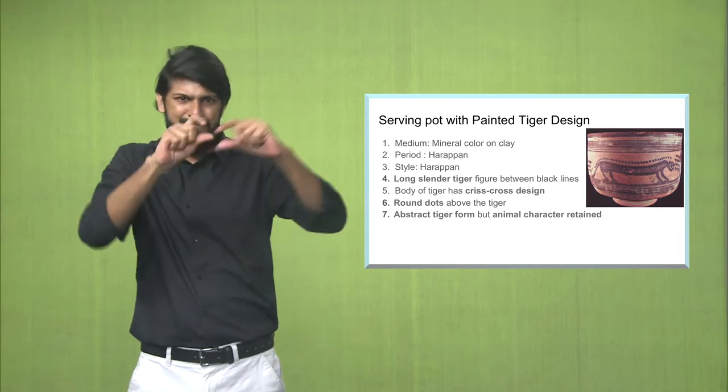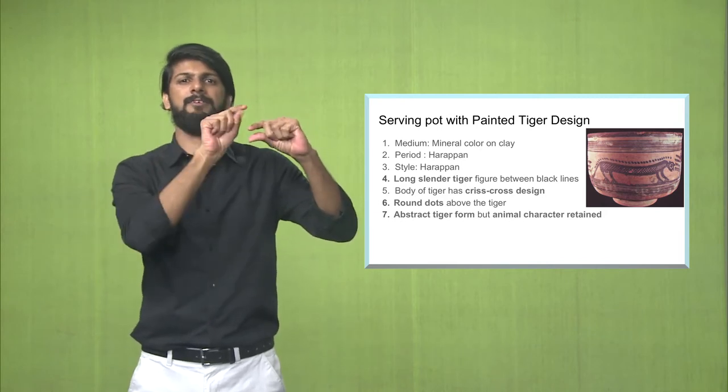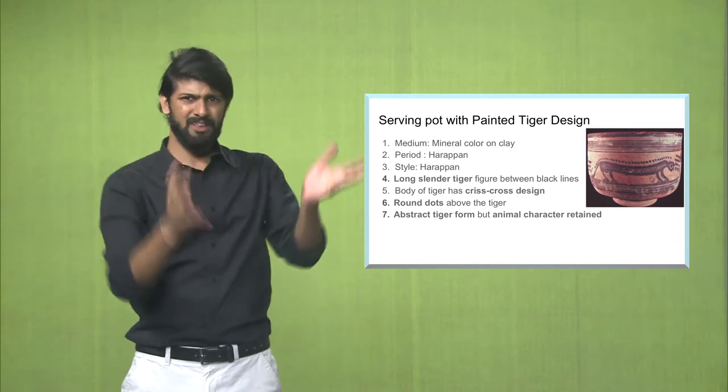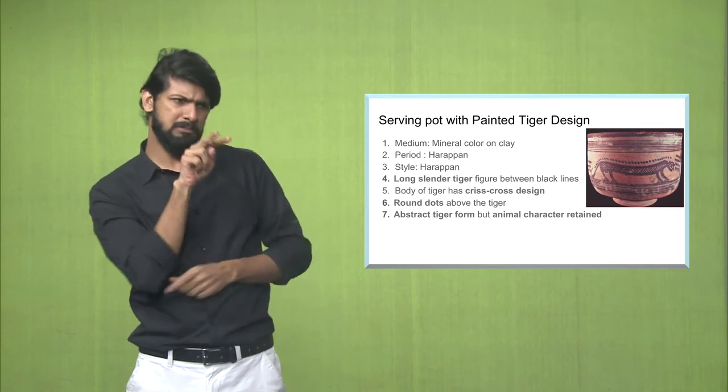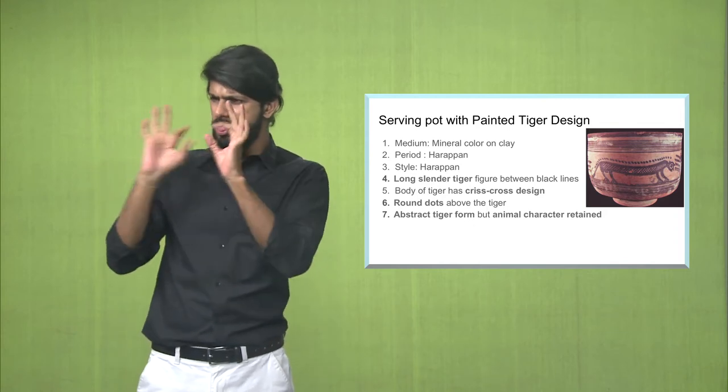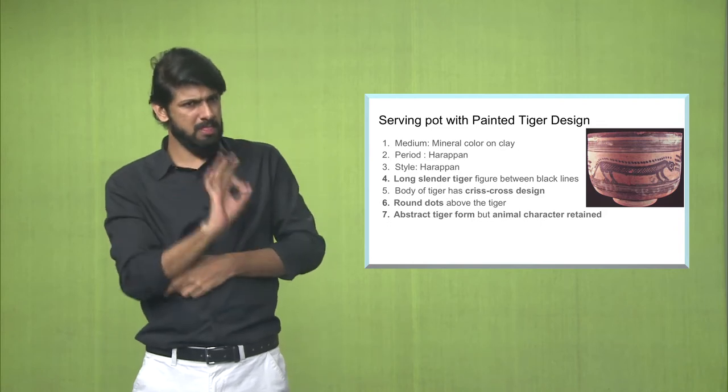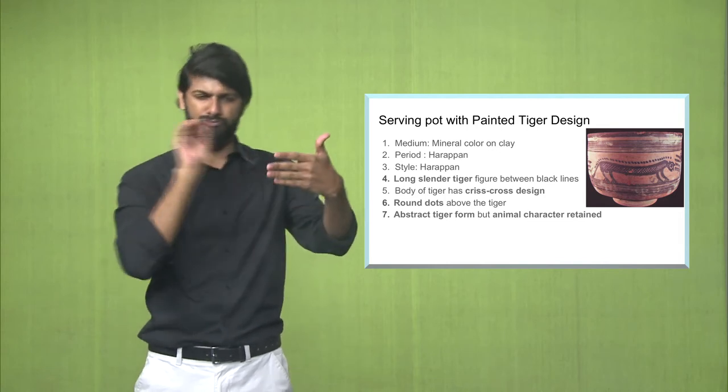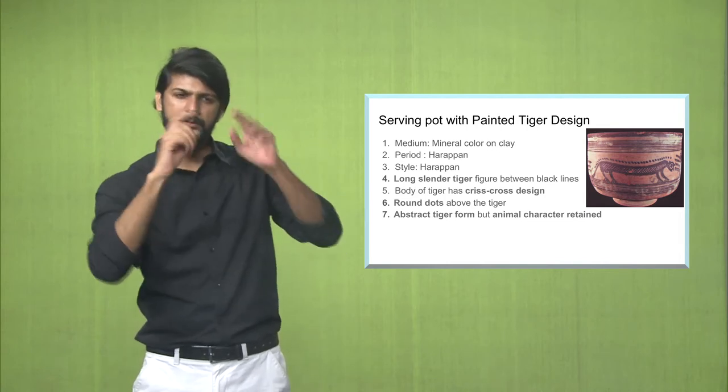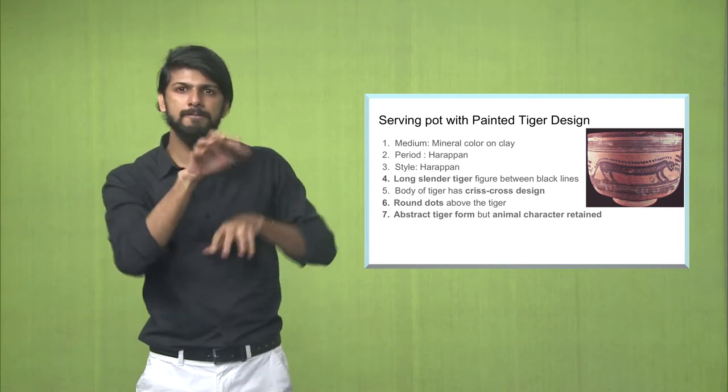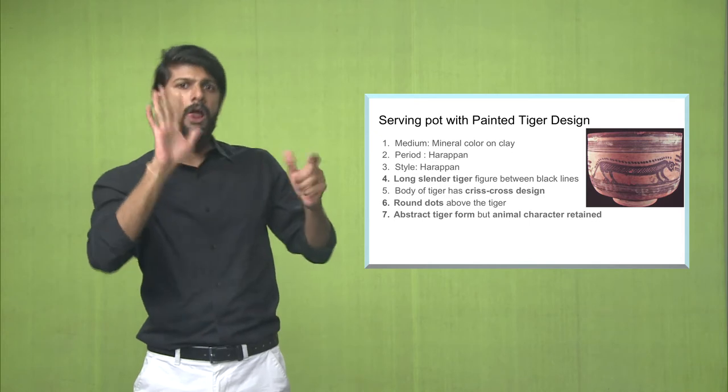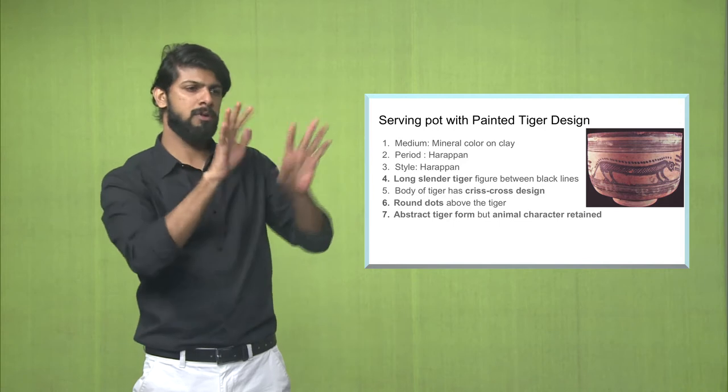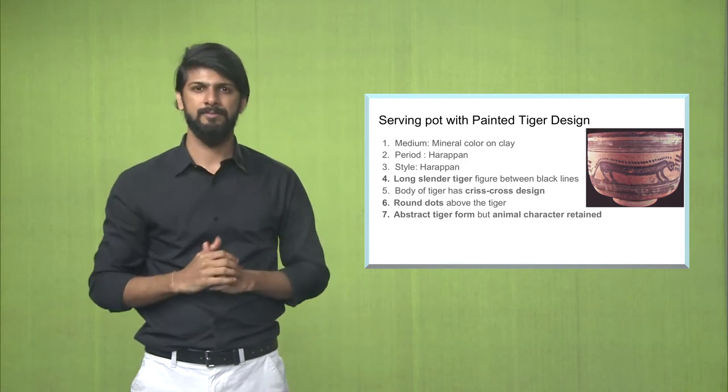Due to the features as you see, there are round dots right above the tiger, a decorative kind of motif, round dots. The pot and the design on the pot looks very abstract because tigers in reality are not so elongated, but this is the artist's creativity. He's created an abstract tiger, but the animal character is retained. You will see it has four legs, face, the tail. The character is intact even though the painting is a little abstract.